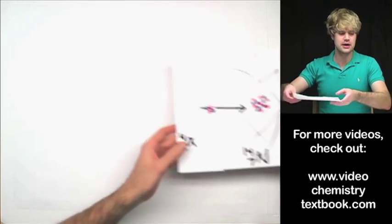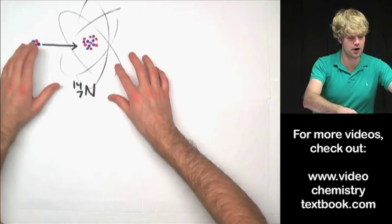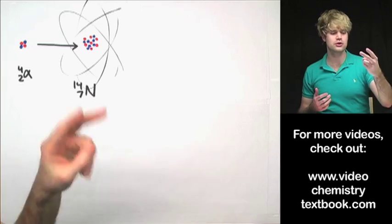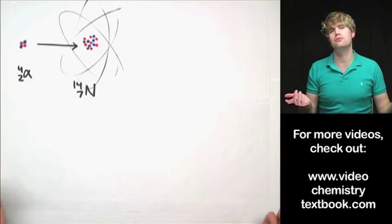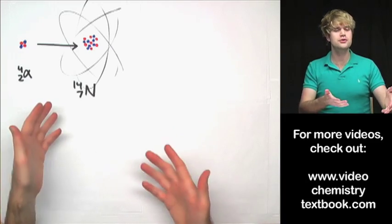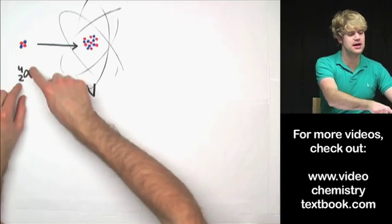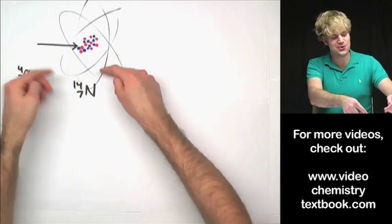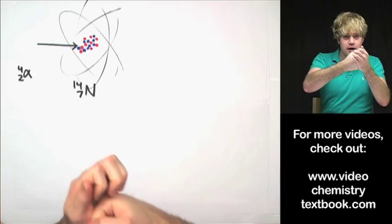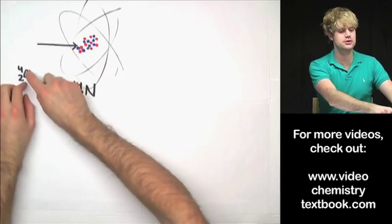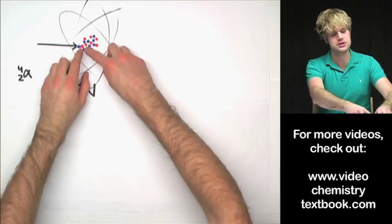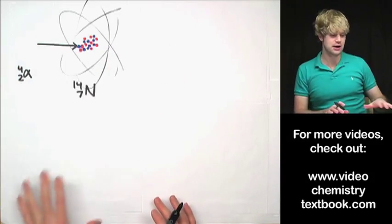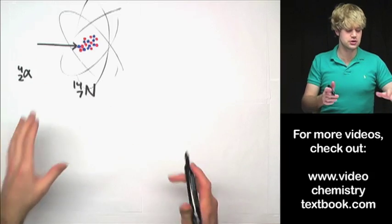Here is an atom of nitrogen-14, and over here I have an alpha particle, which is made of two protons and two neutrons. My little red dots here represent protons, and the blue dots represent neutrons. So if we wanted to do some nuclear transmutation, we take this alpha particle and slam it into the nucleus of this atom, and if we were lucky, it would stick — the protons and neutrons in the alpha particle would end up stuck in the nucleus. So I want to write this as an actual nuclear equation instead of just using the diagram.